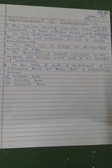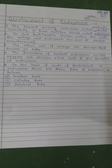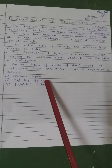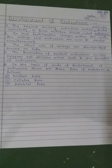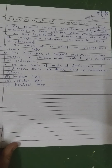The triploid cells undergo repeated division to form endosperm. On the basis of the mode of development of endosperm, there are three types: first is nuclear type, second is cellular type, and third is helobial type of endosperm.